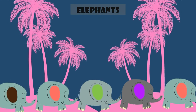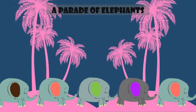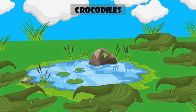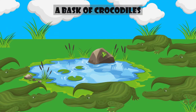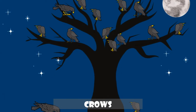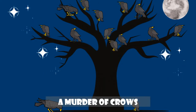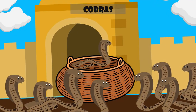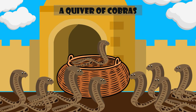A group of elephants is called a parade of elephants. A group of crocodiles is called a bask of crocodiles. A group of crows is called a murder of crows. A group of cobras is called a quiver of cobras.